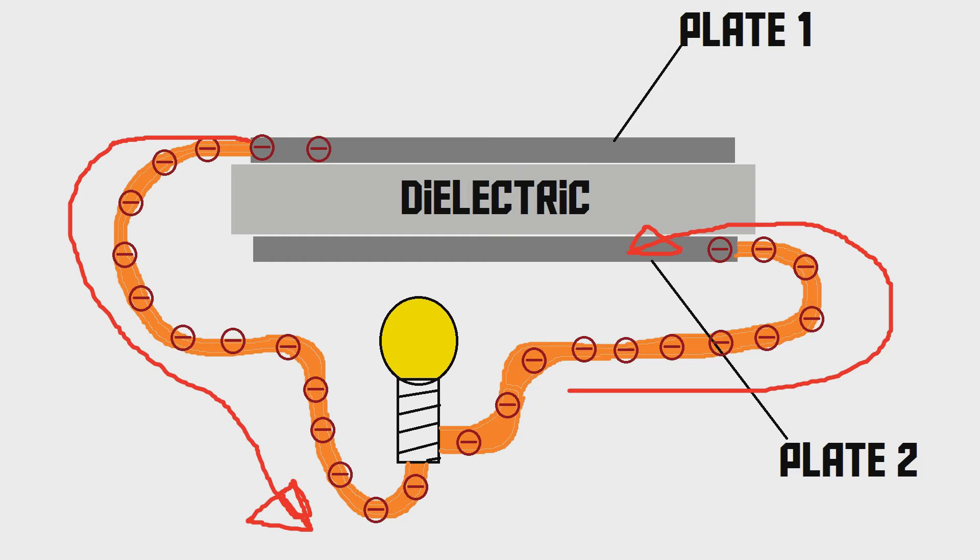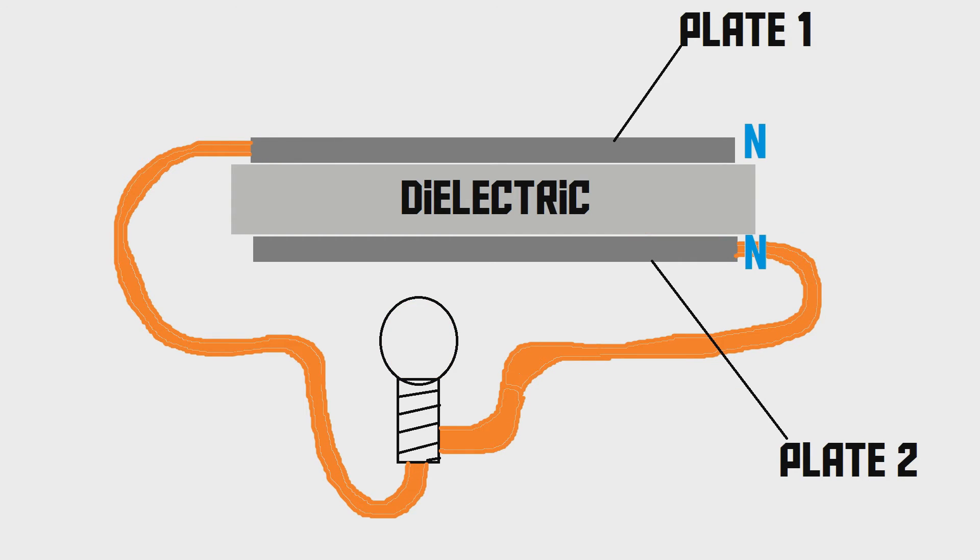So, now we use the charge that we put into the capacitor using the battery. Now we are discharging the capacitor. At a certain point, however, the light bulb goes off again, because the lack of electrons inside plate number two has been compensated, and the oversized amount of electrons in plate number one has reduced. So, now both plates have a neutral charge again. At this point, the capacitor has been discharged. And that is how a capacitor works. That is the entire process of charging a capacitor and discharging it again.